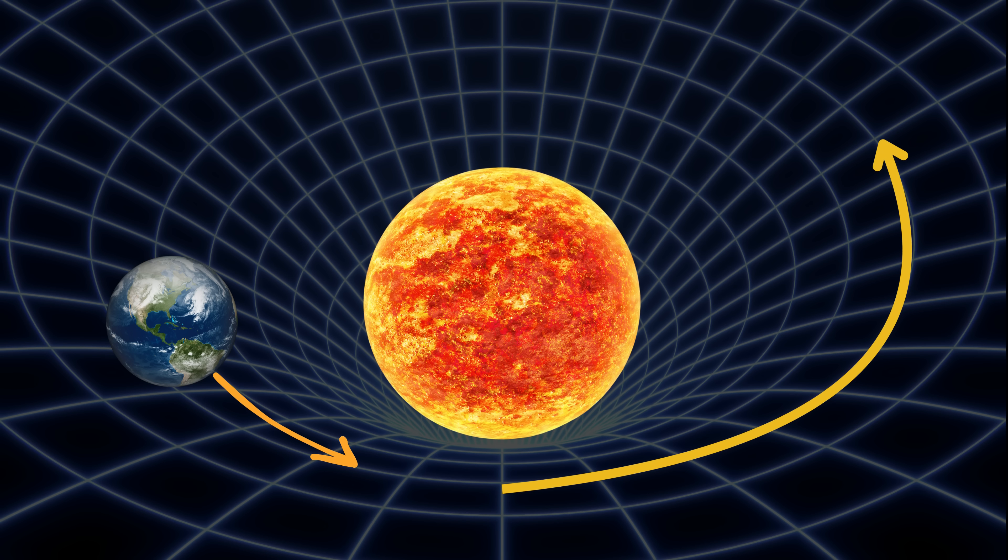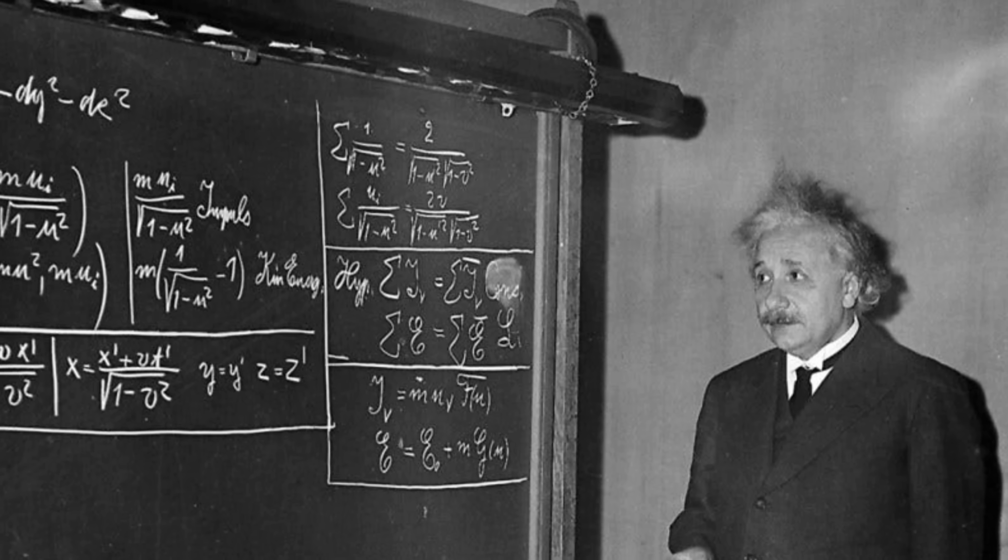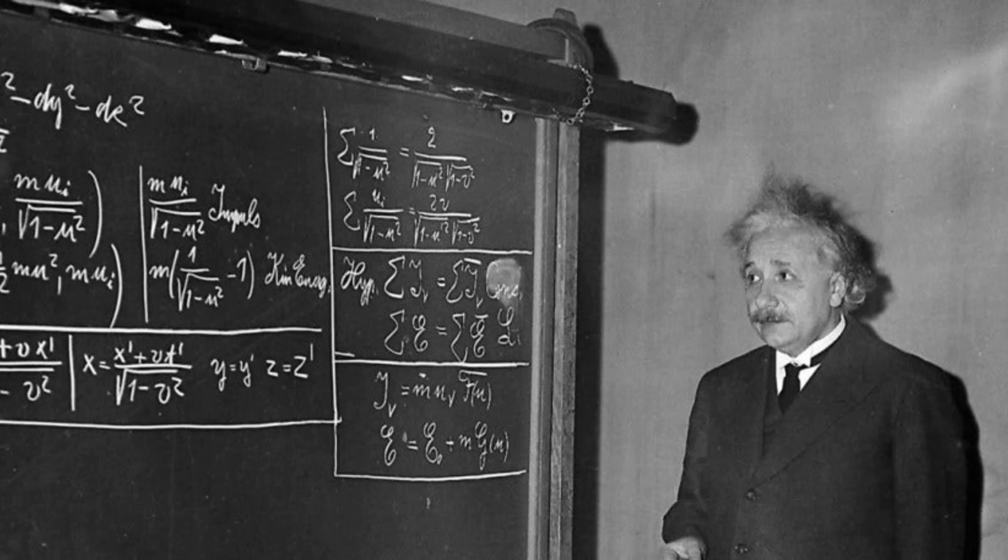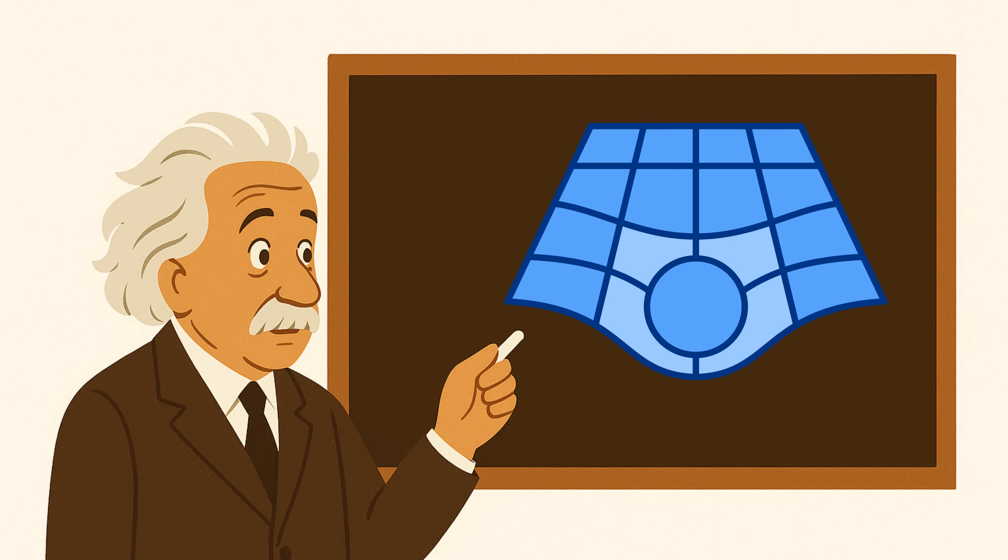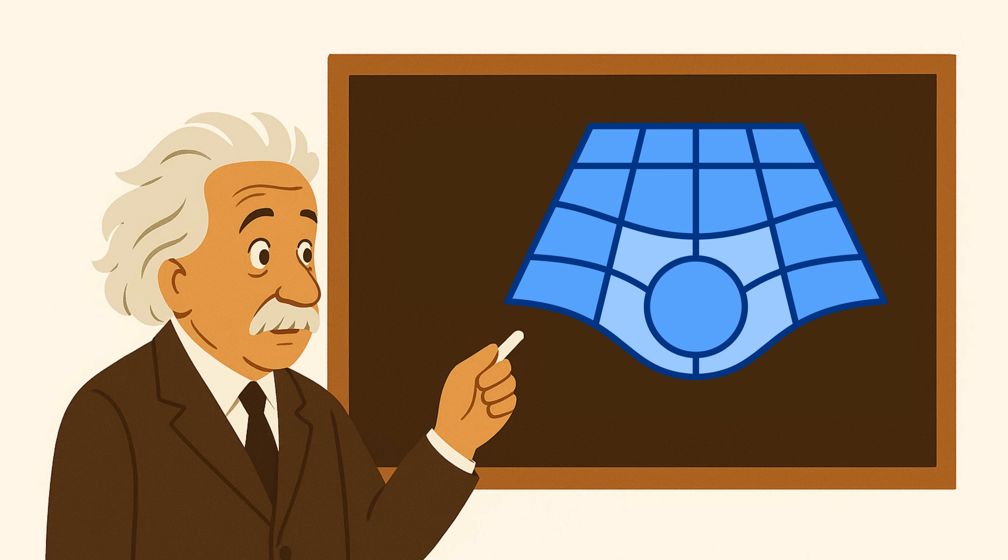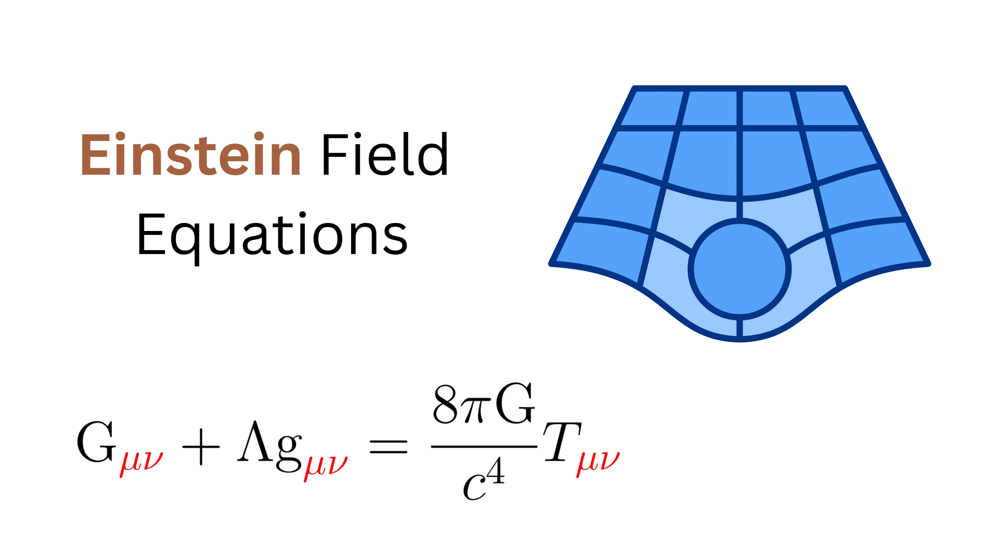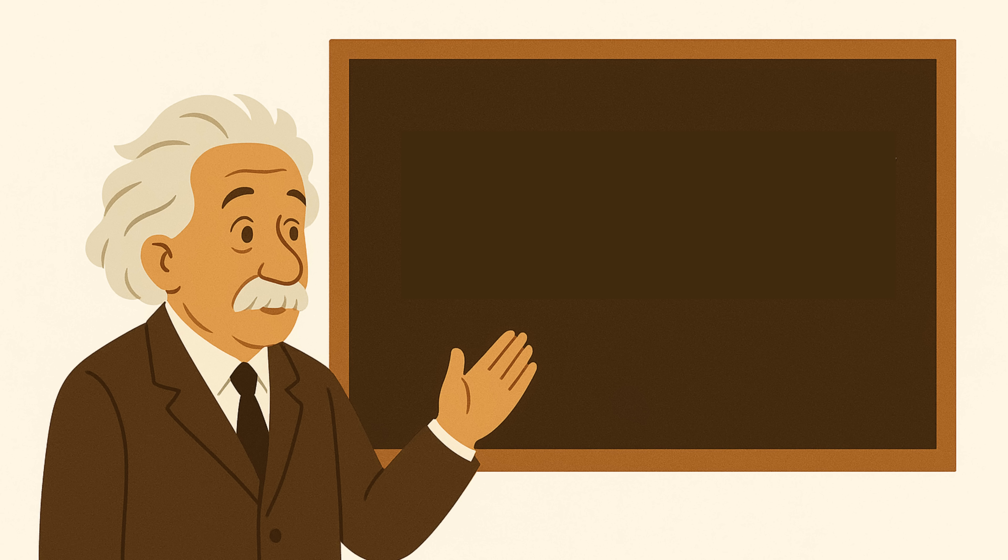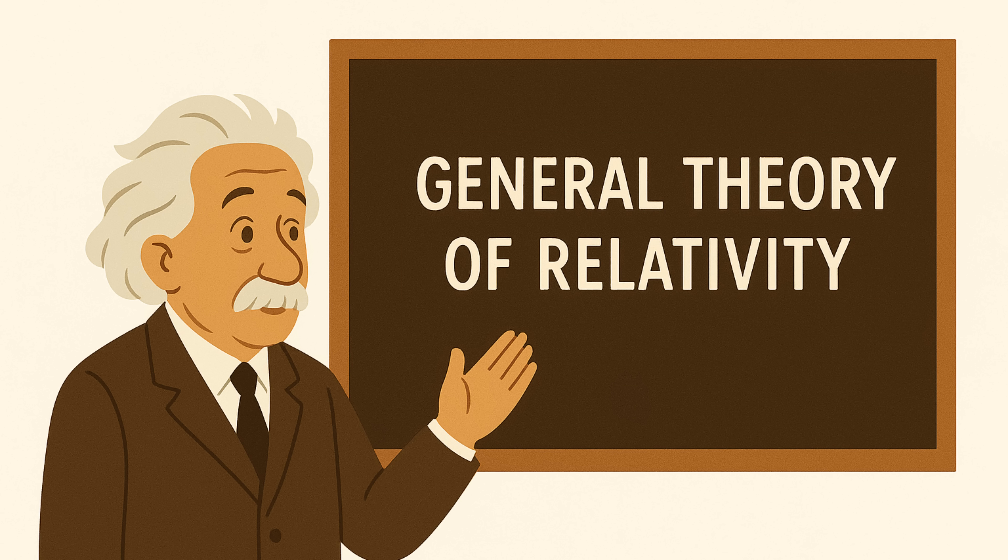To put this into precise mathematical language, Einstein spent nearly eight years developing a set of incredibly complex equations that could describe exactly how mass and energy curve space and time. These became known as the Einstein field equations. And finally, in the year 1915, Einstein presented his new theory to the world. The general theory of relativity.